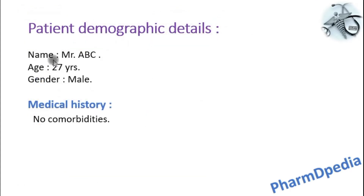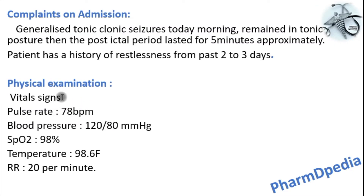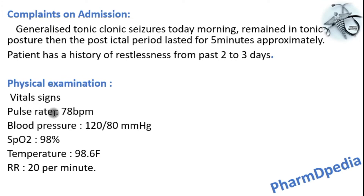A 27-year-old male patient with no comorbidities was admitted due to chief complaints of generalized tonic-clonic seizures in the morning, for which he remained in tonic posture followed by a post-ictal period lasting 5 minutes. He has a history of restlessness for the past 2–3 days. On physical examination, vital signs were found to be normal.